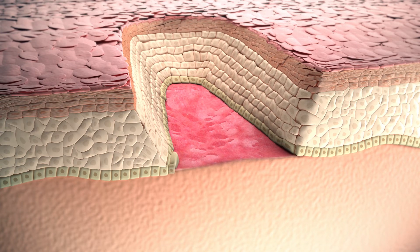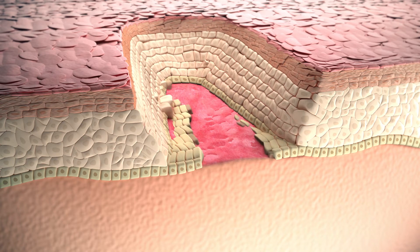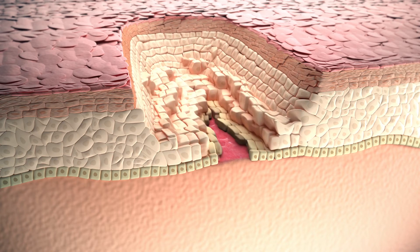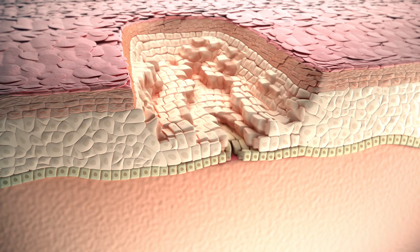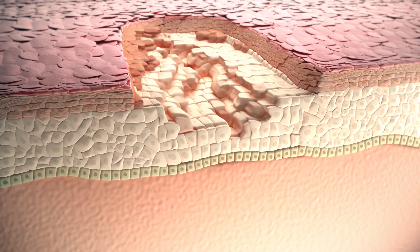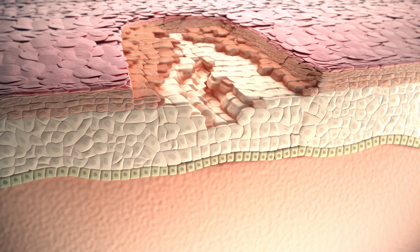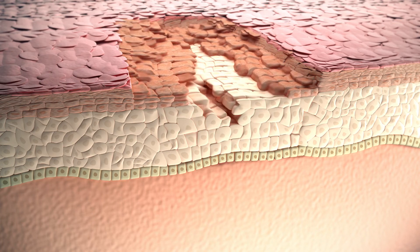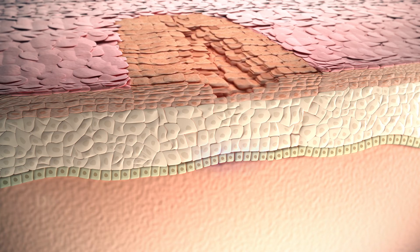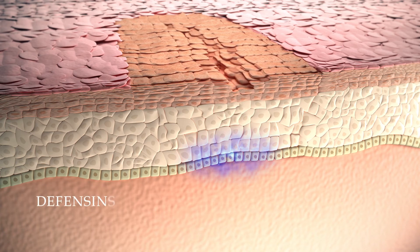It has been demonstrated that hyaluronan enhances keratinocyte migration through the RHAMM receptor, whereas CD44 is involved in keratinocyte proliferation. Taken together, the two effects accelerate the healing process.